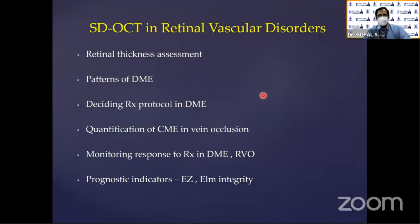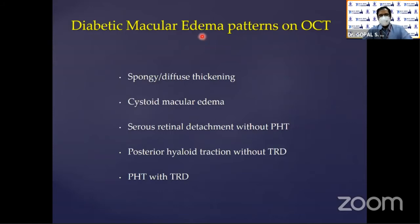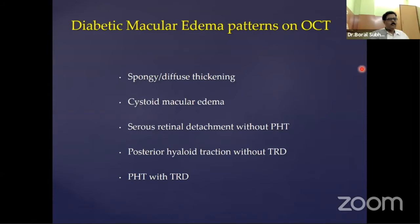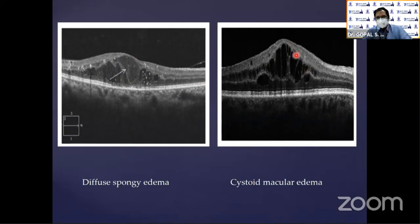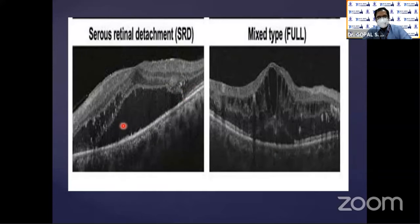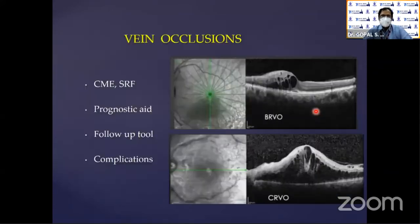Retinal thickness assessment in vascular diseases: you can see the patterns of diabetic macular edema. This is important for deciding treatment protocol, quantification, monitoring response, and prognostic indicators. Diabetic macular edema patterns are spongy, cystoid, serous detachment, and posterior hyaloid. A diffuse spongy edema, cystoid spaces within it, serous sub-macular detachment — and many times there can be mixed presentations.